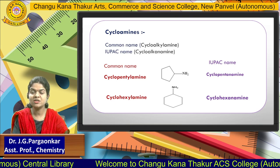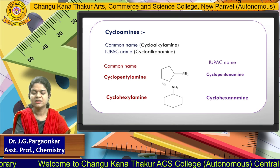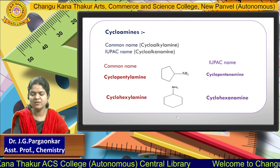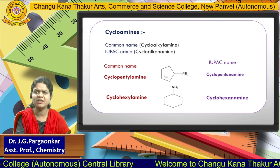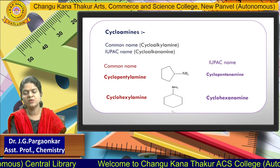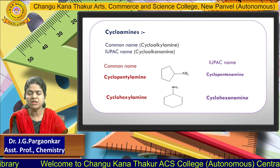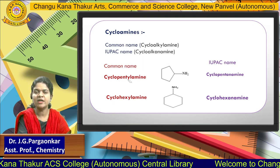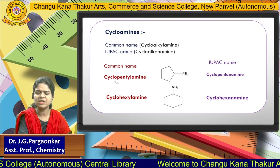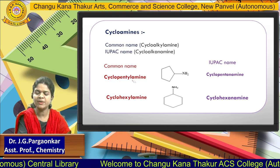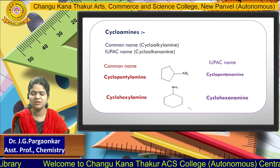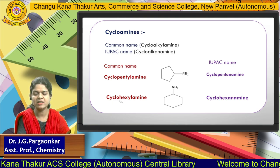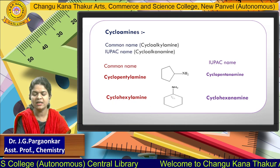In front of us there are two structures. One has a cyclopentyl ring and the next structure has a cyclohexyl ring. NH₂ is attached to the cyclopentyl ring, and NH₂ is attached to the cyclohexyl ring. For common names, we use the word 'cyclo': cyclopentylamine for the five-membered ring, and cyclohexylamine for the six-membered ring.